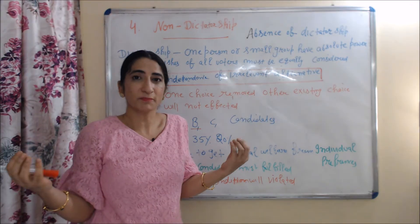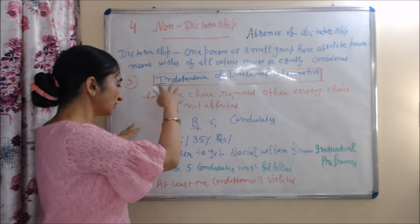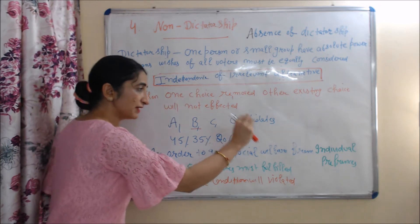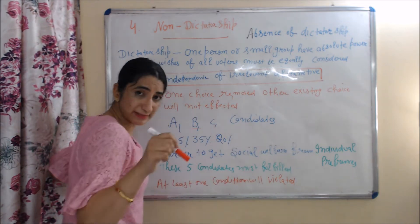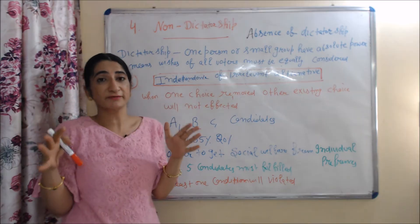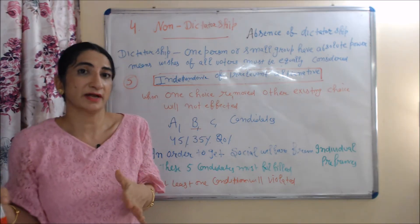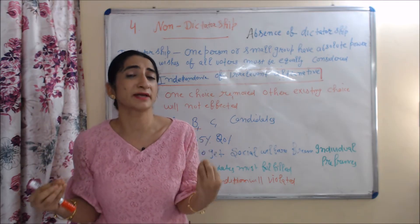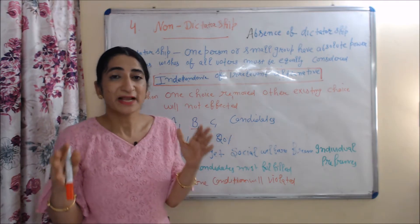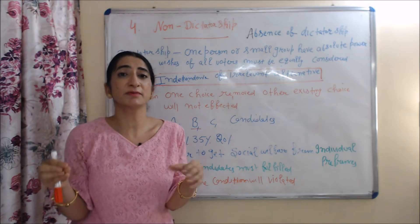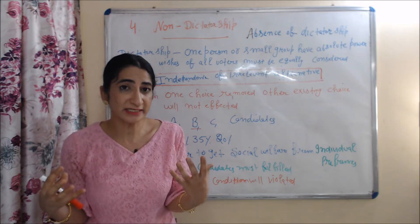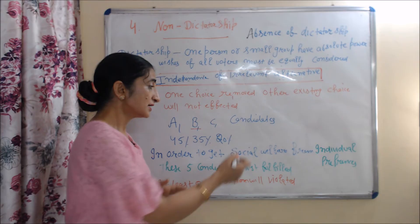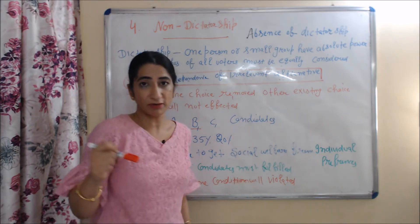But in real life, this is not possible. According to Arrow, in order to get social welfare from individual preferences, all five conditions must be satisfied. But in real life, it is not possible to satisfy all five conditions — at least one condition will be violated. If one condition is violated, how can we get social welfare from individual preferences?